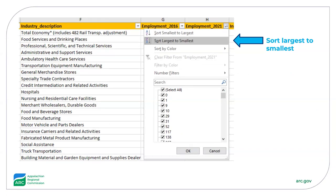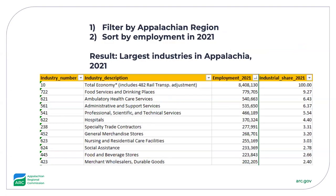One quick example shows the industries in the Appalachian region with the highest employment levels in 2021, along with industrial share values for each. Just a few steps were required to get to this — first to select the Appalachian region, and then to sort largest to smallest.